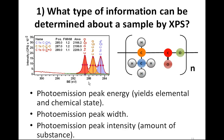The full width at half maximum of peaks also provides some information about chemical state. For example, the aluminium oxide and metal showed different peak widths. In this carbon case, we might see a width of about 1 eV, and with sufficient resolution, we might distinguish a graphitic carbon peak from a polymer carbon peak. But the more important evidence derives from the binding energy and from peak intensity.